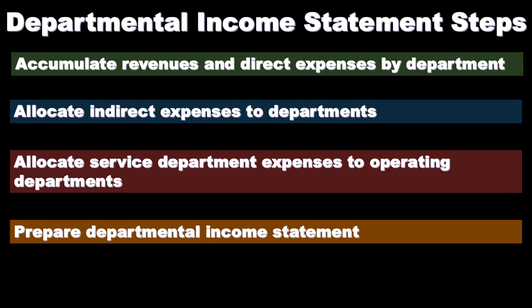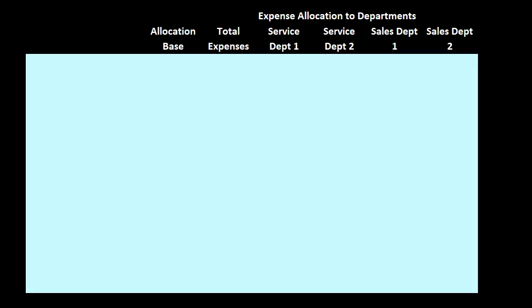Our first step is to accumulate revenues and direct expenses by department. This should be a fairly straightforward process. This is the worksheet we will be using. Up top we have the allocation base, which is what we're going to use to allocate certain items, typically the indirect items. We've got the total expenses — we know what the total expenses are, and we need to break those out into the departments. Sometimes this will be easy with direct expenses, sometimes more difficult with indirect expenses and the service department.